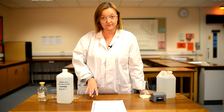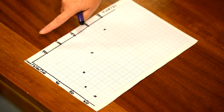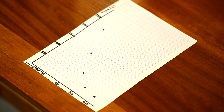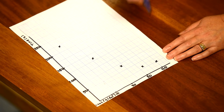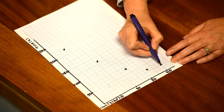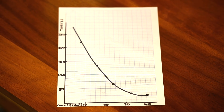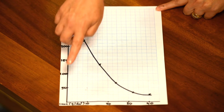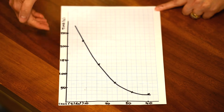Now I've collected data for all of my different concentrations, with an average time for each, and as you can see the data forms a curved shape. The line of best fit won't be a straight line — it will be a curve. I'm going to draw a smooth curve through my points. As we can see, as we increase the concentration of sodium thiosulfate, the reaction time decreases.